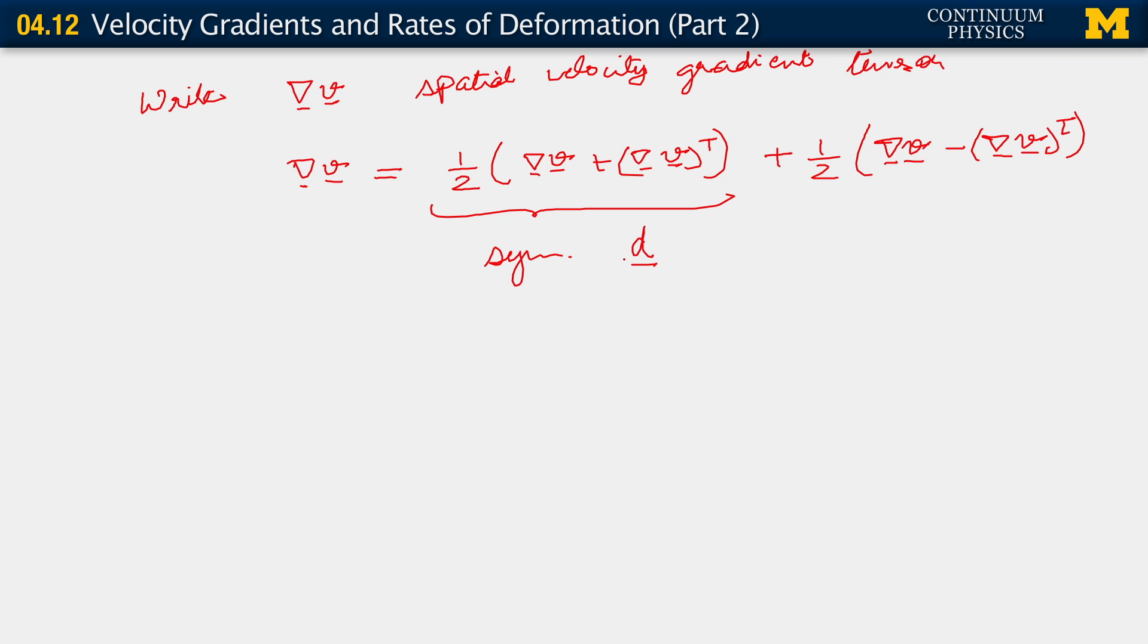And the skew-symmetric part of it is... This is symmetric and is denoted as d. This symmetric tensor is called the rate of deformation. And this tensor is skew-symmetric. It's commonly denoted as omega. It is called either the spin or vorticity tensor.